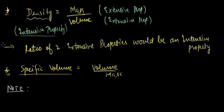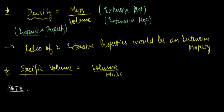We will be discussing more on the basic concepts of thermodynamics. Density is equal to mass upon volume. We know from the previous lecture that mass is an extensive property and volume is an extensive property. The effect of both extensive properties cancels out when they are in a ratio, so density is an intensive property. In other words, the ratio of two extensive properties is an intensive property. Similarly, specific volume is the ratio of volume upon mass, so specific volume is also an intensive property.